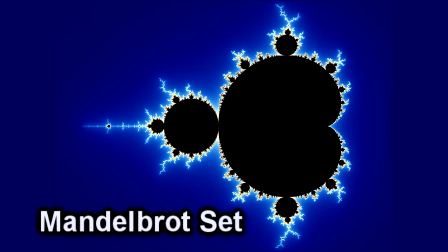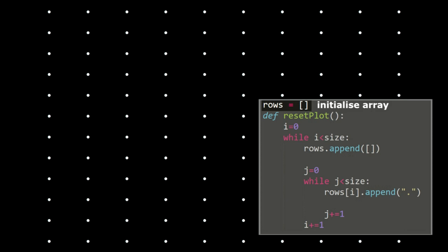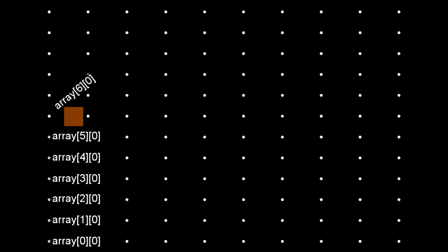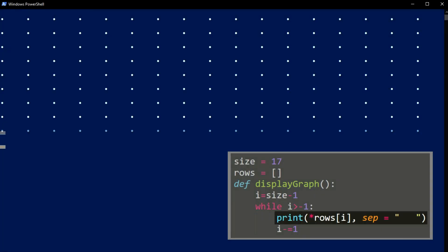Before diving into the fractal, I wanted to start with simple plots then move onto more complex ones. I started by creating a 2D array. This may sound complicated but it is just an array where each element of the array is an array. Each element can be thought of as a pixel in our plot, and can be selected by accessing our array of arrays. To display this plot, we just need to loop through and print each row.